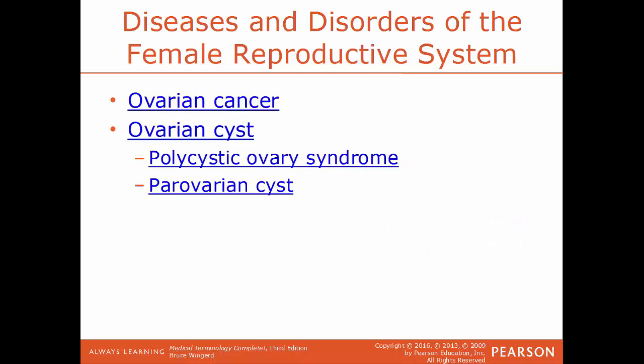Ovarian cancer is cancer within the ovaries. Ovarian cyst is the development of a fluid-filled sac within the ovary. This can lead to polycystic ovarian syndrome, caused by estrogen and progesterone levels becoming way off balance, leading to the development of multiple cysts throughout the ovary. A paraovarian cyst is where you have the growth of a cyst very nearby the ovary but not attached to it — that's why it's called paraovarian.